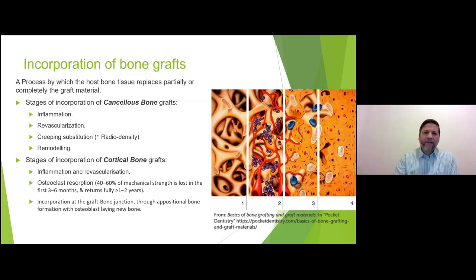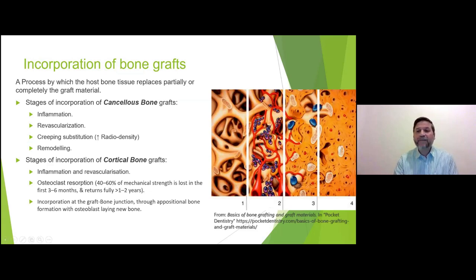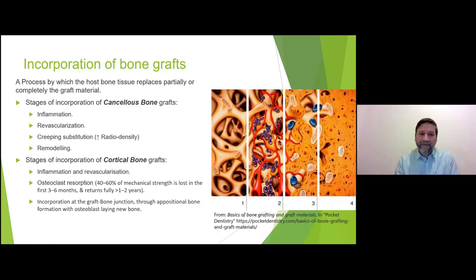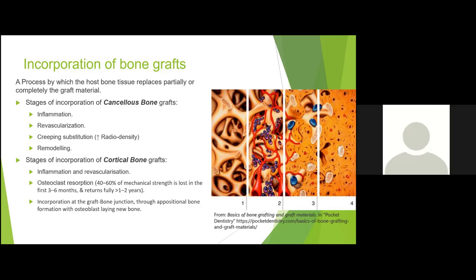Looking at incorporation: you start with the bone graft, then slowly inflammation attracts blood vessels and immune cells, which lay new calcium through creeping substitution. On X-ray it looks like increased density, then slowly remodels. In cancellous bone the original material completely disappears. In cortical bone, the first two stages are the same, but there is no creeping substitution — most action happens at the surface, and the core of the cortical bone graft remains for years and sometimes never disappears.